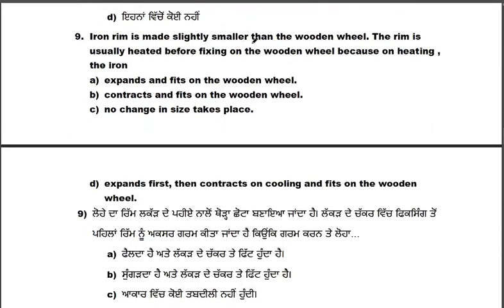The iron rim is made slightly smaller than the wooden wheel. The rim is usually heated before fixing on the wooden wheel because on heating the iron expands and fits on the wooden wheel, then contracts and fits tightly on cooling.